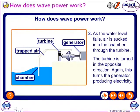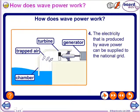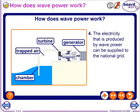As the water level falls, air is sucked into the chamber through the turbine. The turbine is turned in the opposite direction. Again, this makes electricity. The electricity that is produced by the wave power can be supplied to the national grid.